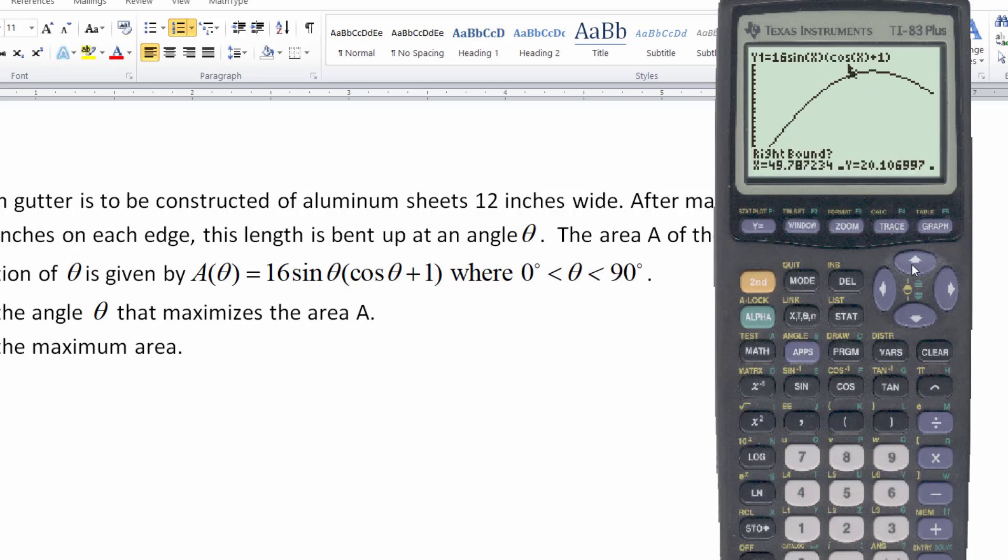Because I know that's where the maximum will occur. So I go a little bit closer to it. I don't have to get too close to it. I'll just hit enter. Now it's right bound. So I'll go past that high point there. Call it a vertex if you want. Just go past it. And then hit enter. Now it wants a guess. You can ignore that and just hit enter.